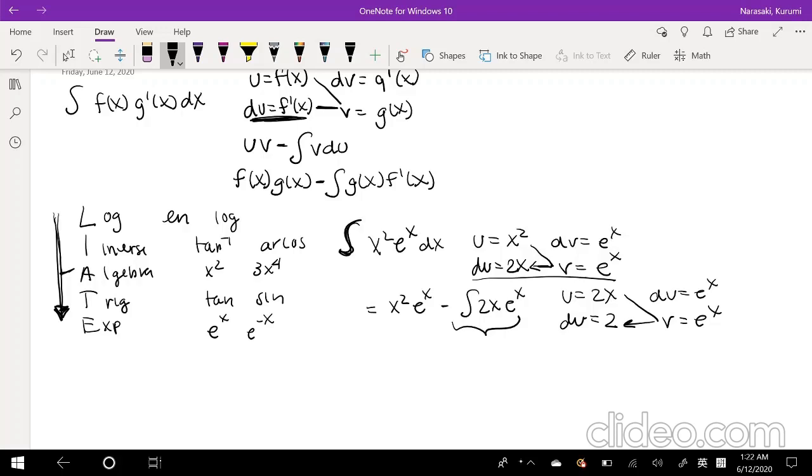So that's going to be equal to, we're going to rewrite this part. Again, don't forget that minus sign. And that's just going to be equal to 2x e to the x minus 2 e to the x. And don't forget, this is integration. We can totally take the integration of 2 e to the x. It's just 2 e to the x.